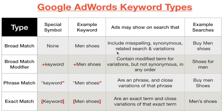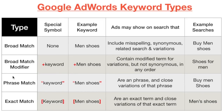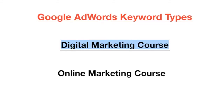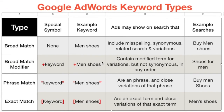These keyword types can help you run very successful campaigns. Using the right keyword type is beneficial for your business. Broad match shows almost every time; exact match shows only for your specific keyword; broad match modifier shows broadly but without synonyms; phrase match shows whenever the phrase is included in order. Choosing the right type saves money and gives better output. In the next video, we'll talk about negative keywords.